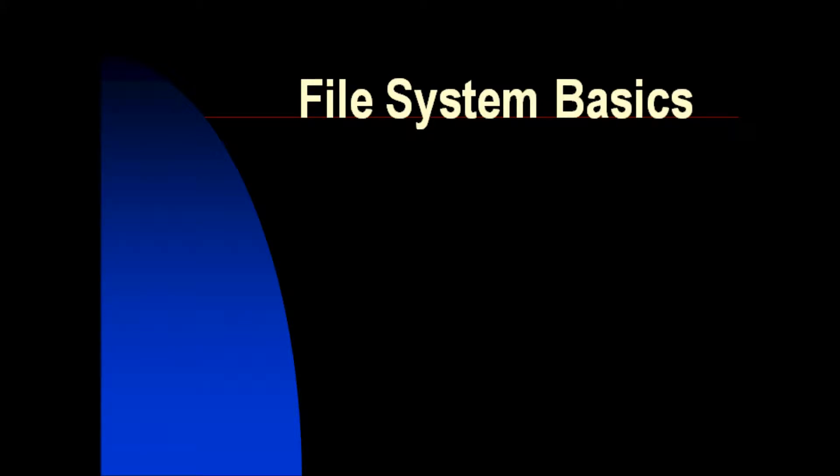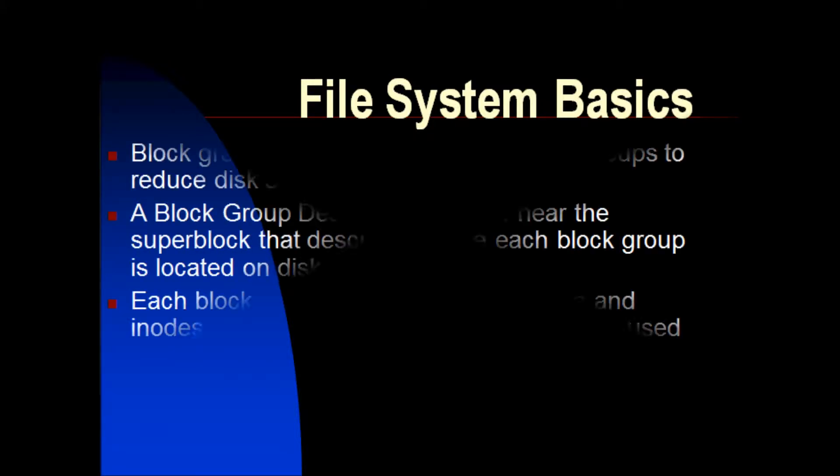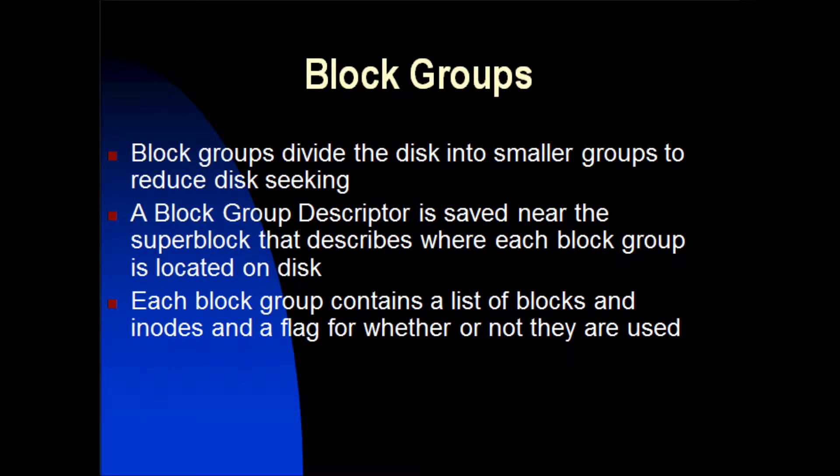File System Basis: Block Groups. Block groups divide the disk into smaller groups to reduce disk seeking. A block group descriptor is saved near the super block that describes where each block group is located on disk. Each block group contains a list of blocks and inodes and a flag for whether or not they are used.